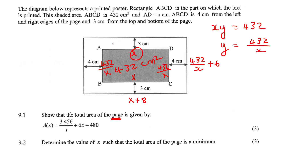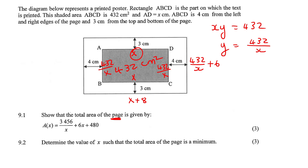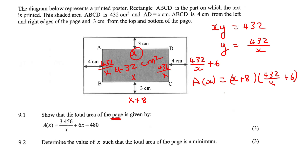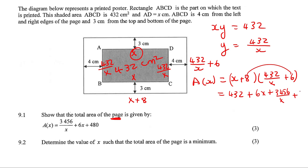So if you then wanted to get the area of this entire thing, it would be length times height. So the area — let's call it A(X) — would then be (X + 8) multiplied by (432/X + 6). Now we're just going to multiply out: X times 432/X gives 432, then 6 times X gives 6X, then 8 times 432/X gives 3456 over X, and then 8 times 6 gives 48. Putting 48 and 432 together gives 480, and we've got exactly what they wanted.